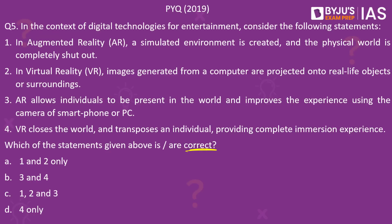Before the discussion, understand what virtual reality is. Virtual reality, in simple terms, is a computer-generated simulation of an alternate world or reality — the real world is completely shut out. Whereas in augmented reality, images generated from a computer are projected onto real-life objects or surroundings, improving the user's experience. From this discussion, it becomes clear that statements 1 and 2 are wrong because they are interchanged. Statements 3 and 4 are correct. The answer to this question is option B — 3 and 4.